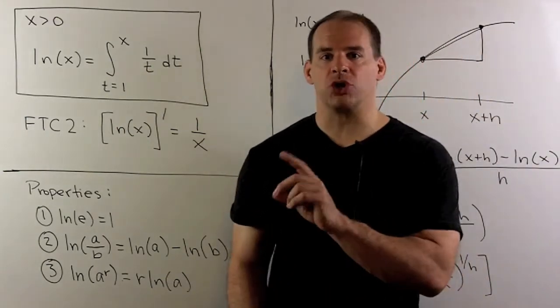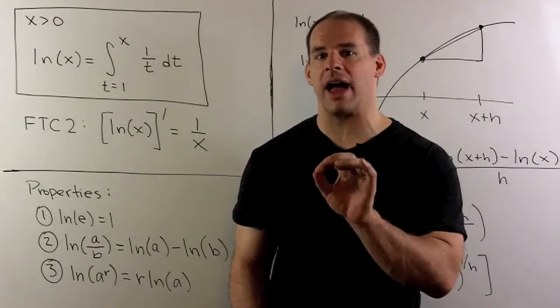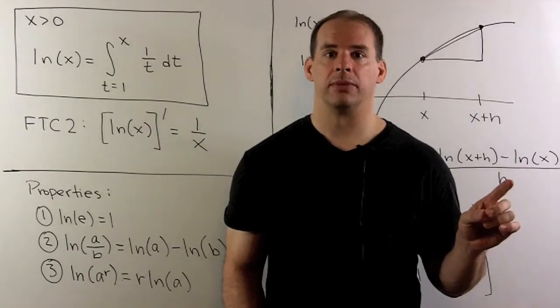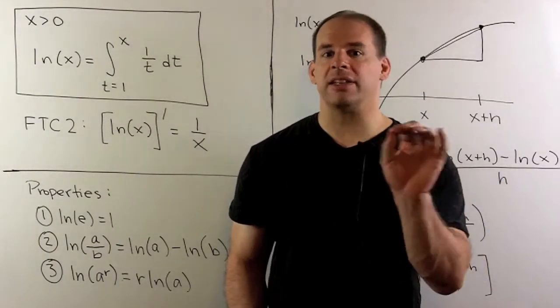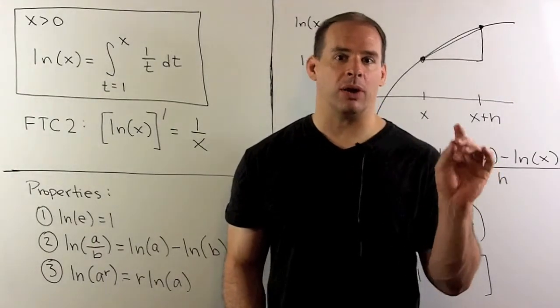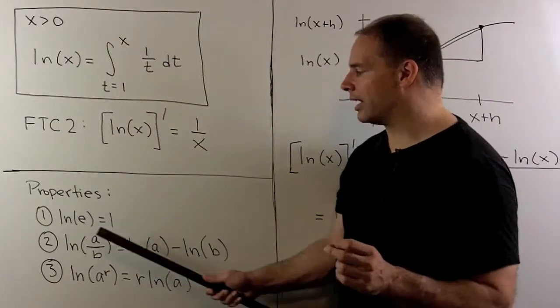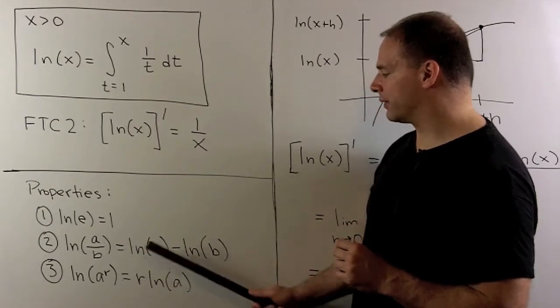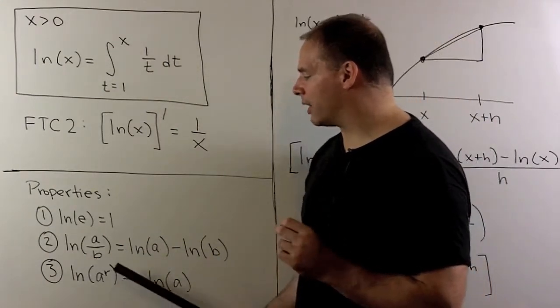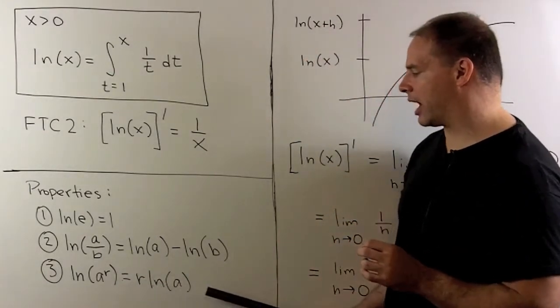Now we could have developed natural log in a completely different way. So in pre-calculus, you may have seen natural log as a function that returns exponents. If we consider that definition, we could reconstruct the three properties that we've already developed. So we'd have that natural log of e is equal to one, natural log of a quotient is equal to a difference of natural logs, and natural log of a number to an exponent is just equal to—you bring the exponent down and then take the natural log.